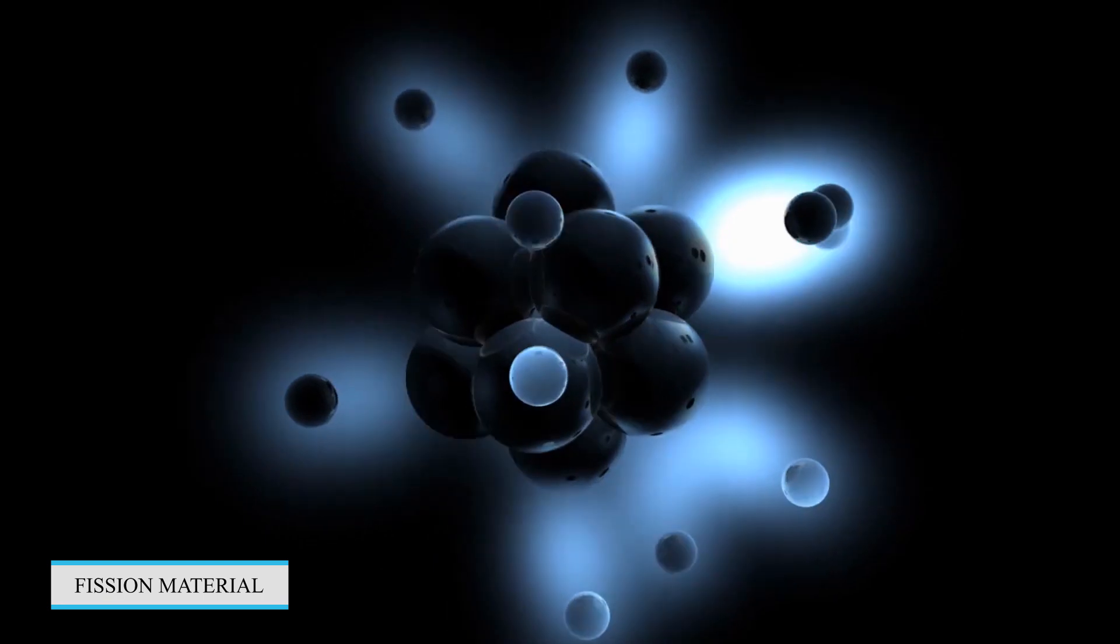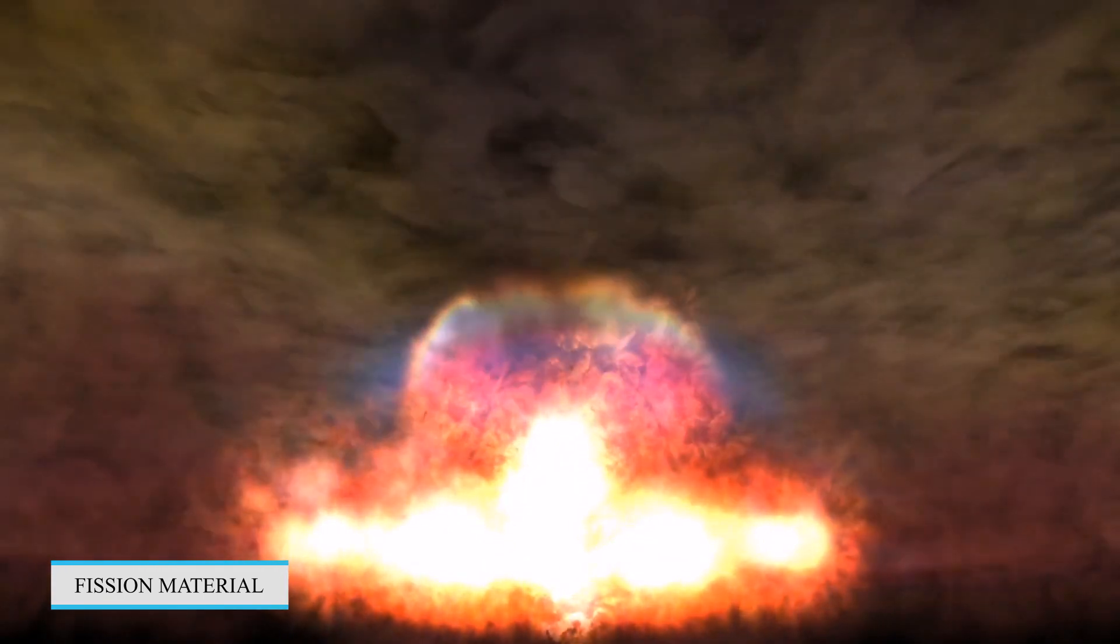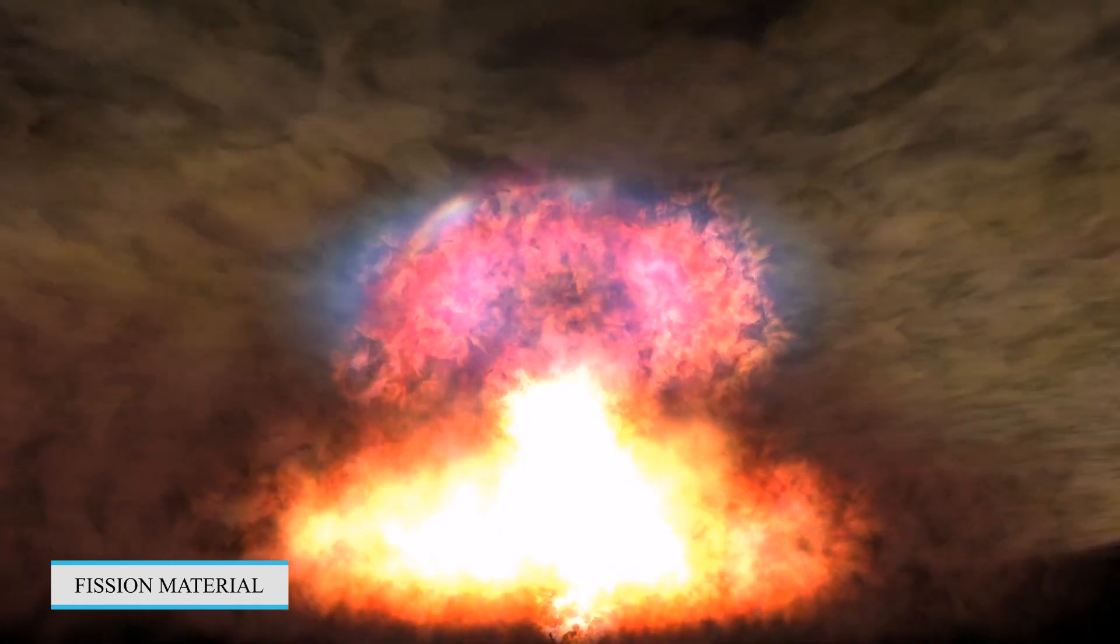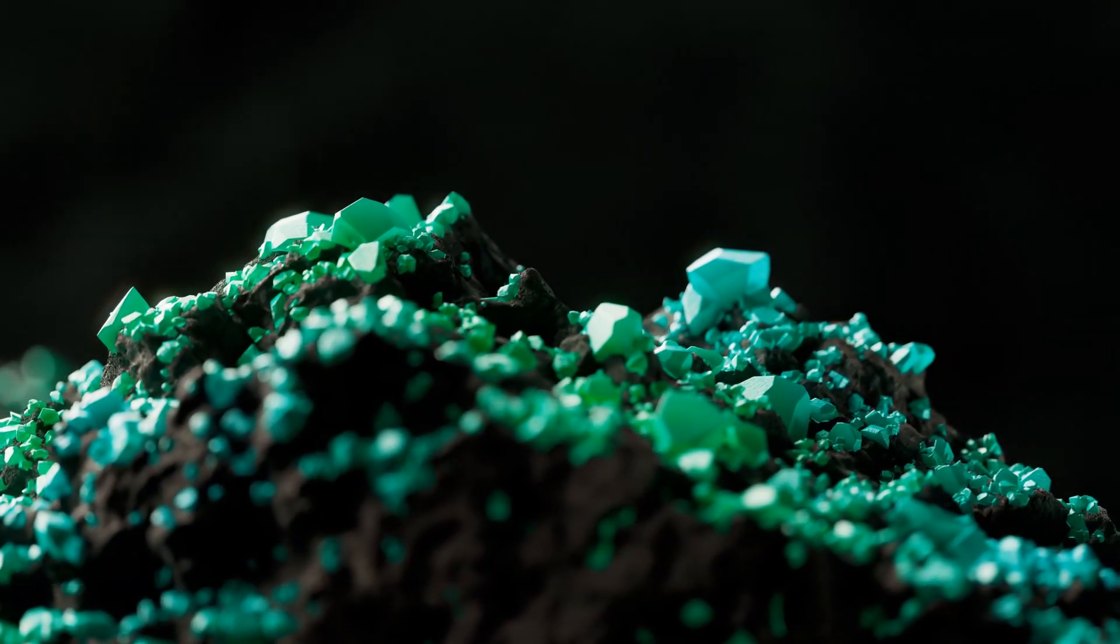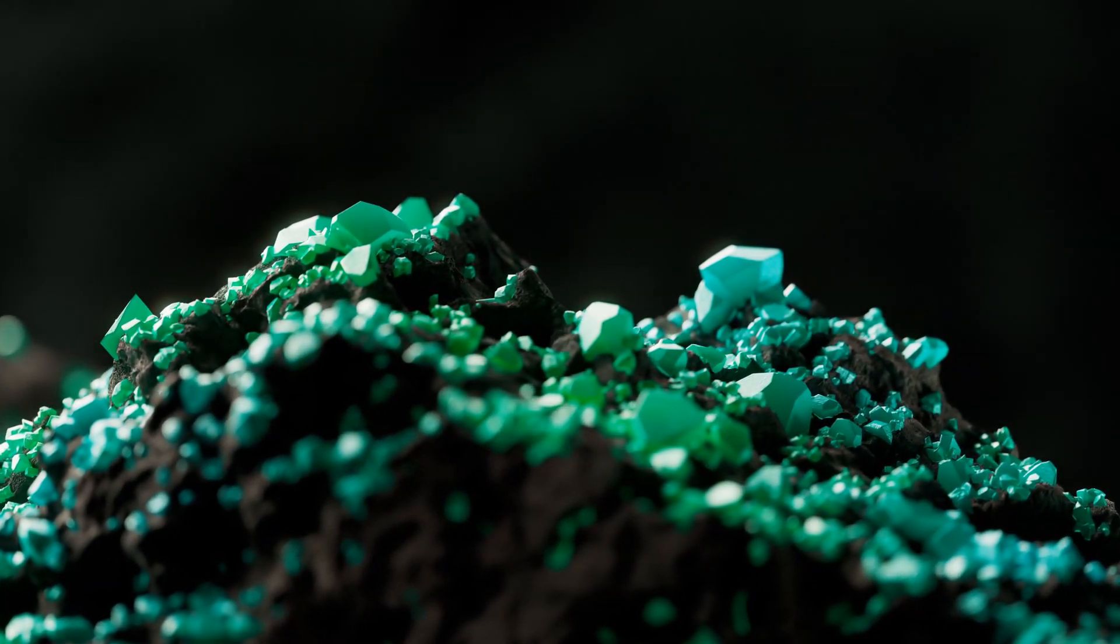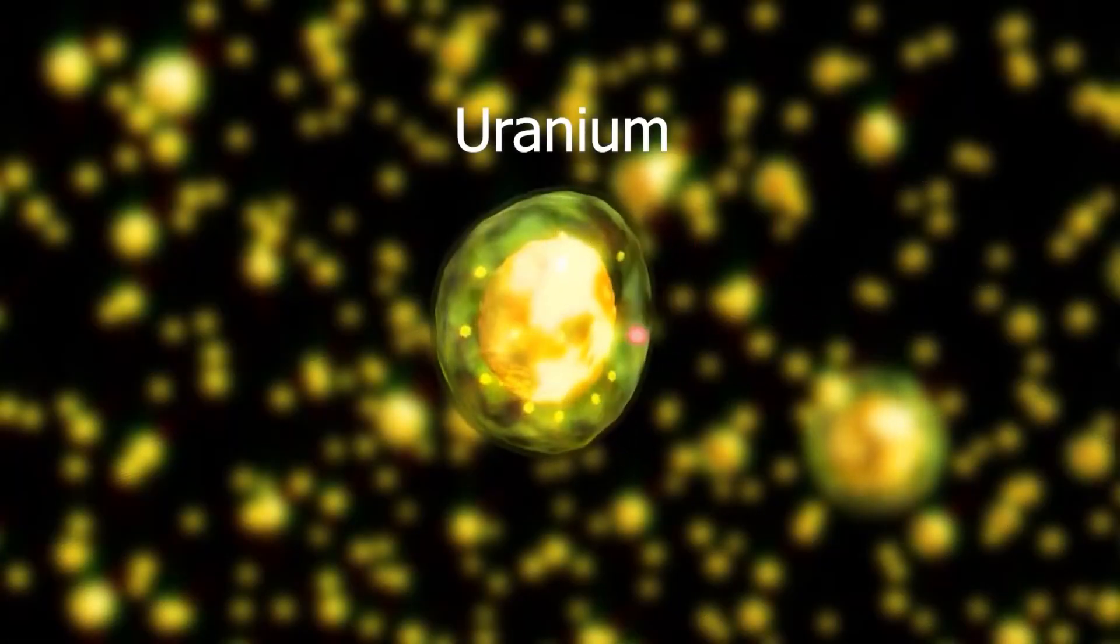One, fissile material. The core of a nuclear bomb contains fissile material, which is the substance capable of undergoing nuclear fission. The two primary fissile materials used in nuclear weapons are uranium-235.